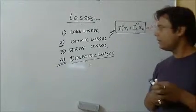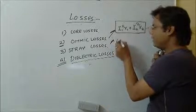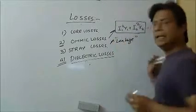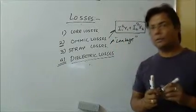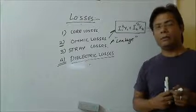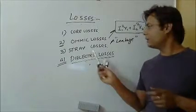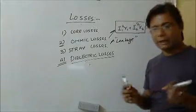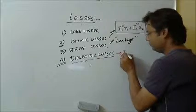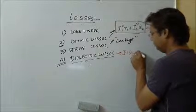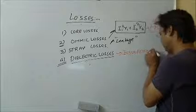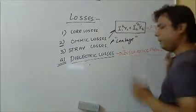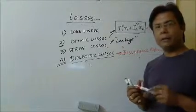Stray losses are because of leakage — leakage in the tanks, bolts, etc. Whatever leakage is happening in those areas comes under stray losses. The last type, dielectric losses, are in the insulating material.